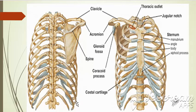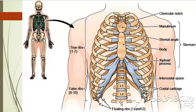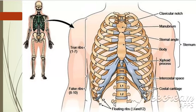The 10th rib is the lower point and it lies at the level of the L3 vertebra. This is the L3 vertebra — L1, L2, and L3. This 10th rib lies at the level of the L3 vertebra, the 3rd lumbar vertebra.